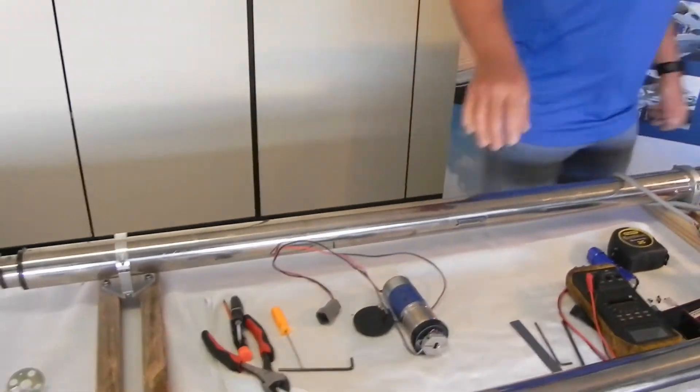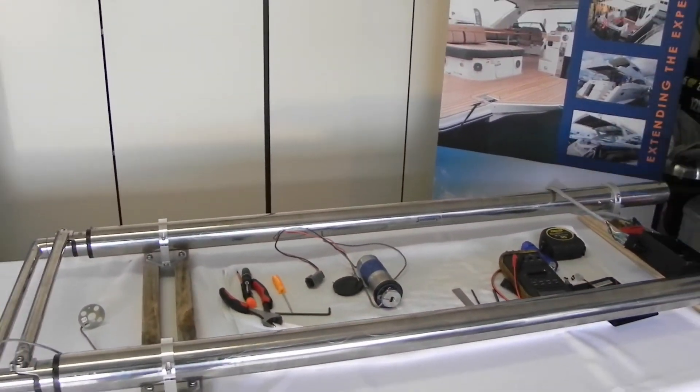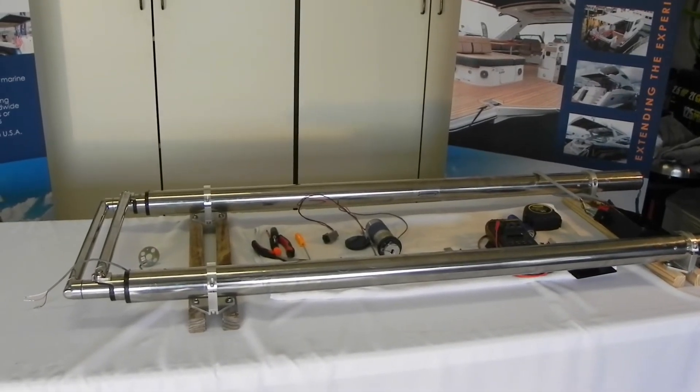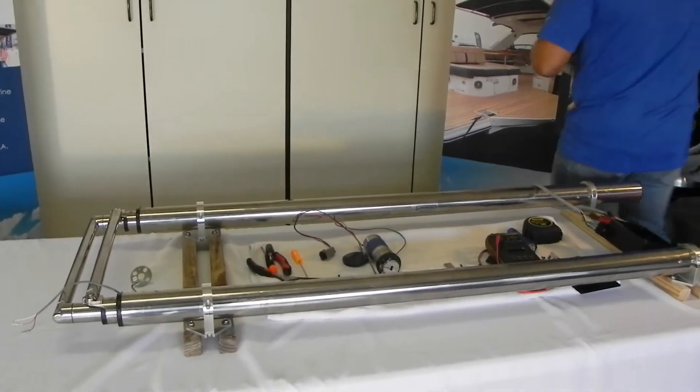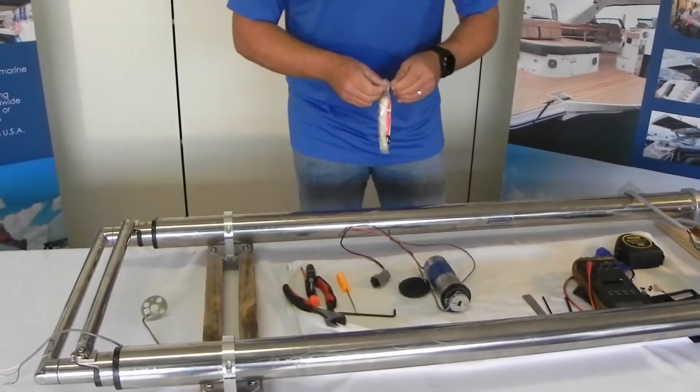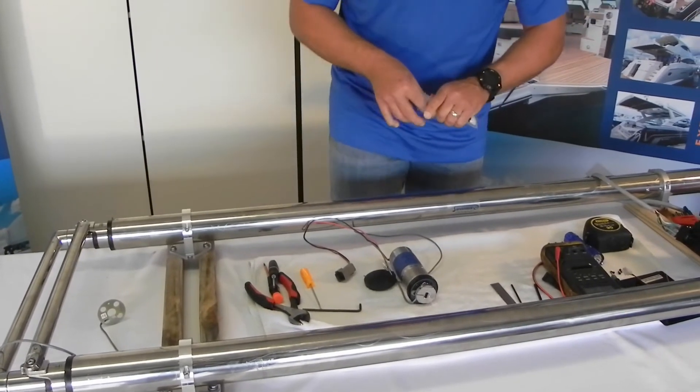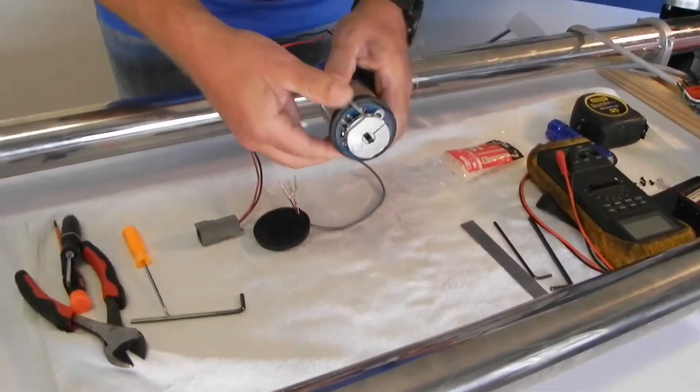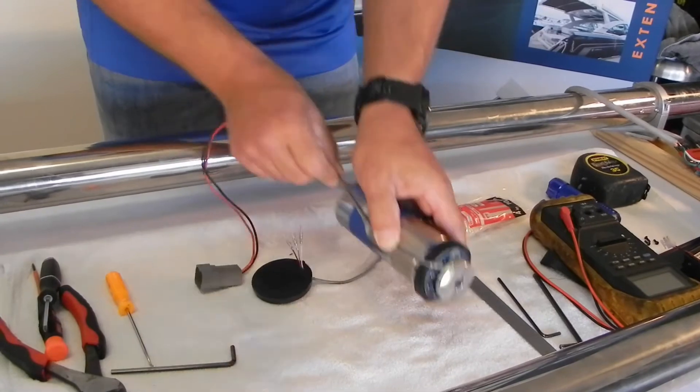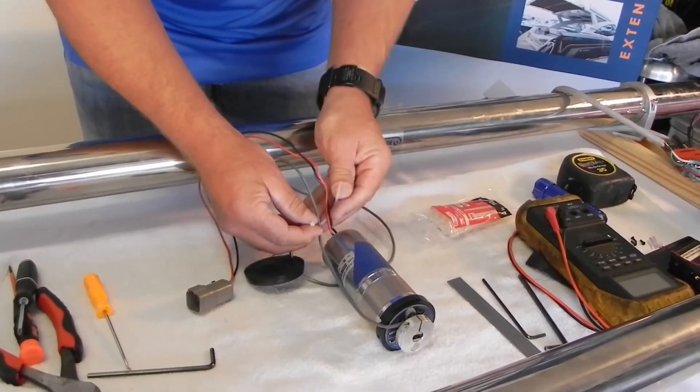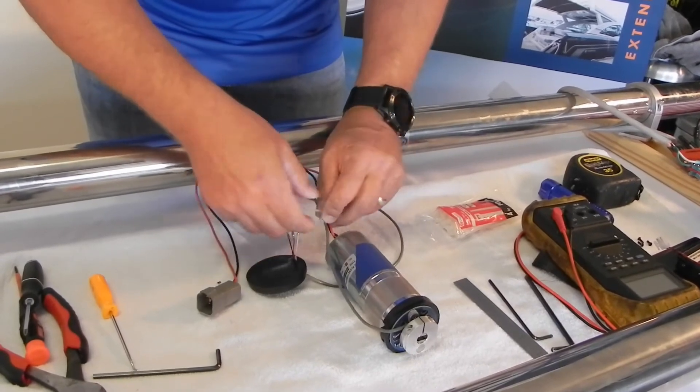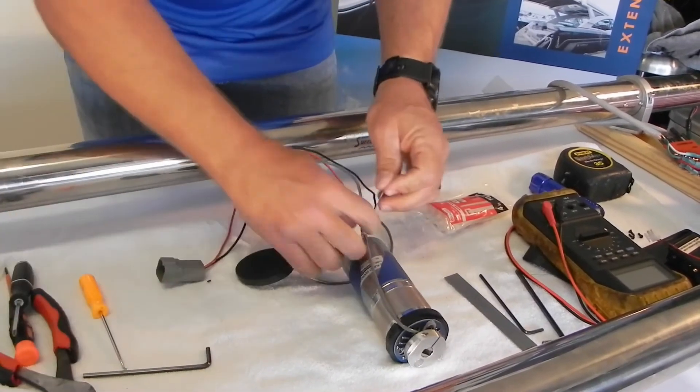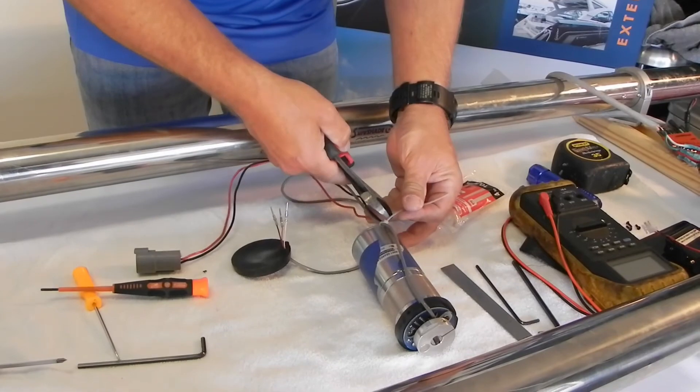Then we're going to take a new zip tie. I just happen to have white. Black, white, whatever color makes you happy. Run your wire down through your opening, down to your grouping here. And again, you don't want these being super tight because if you over-tighten the zip tie, you can actually break the sheathing on the wire and cause a short. Just meant to hold it in place. Cut the excess piece off. This should be what you've got.